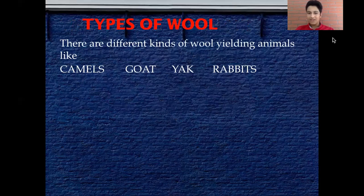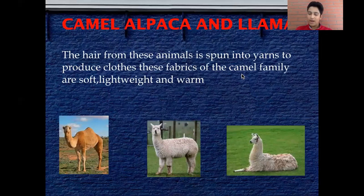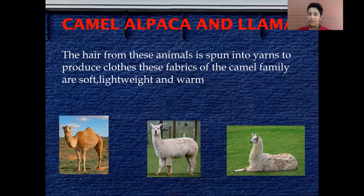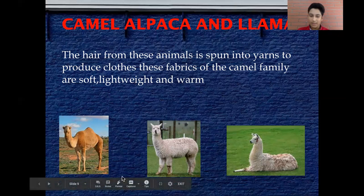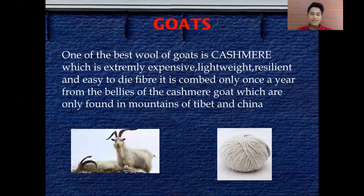There are different kinds of wool-yielding animals such as camels, goats, yaks, and rabbits. Camels, alpacas, and llamas are basically from the same family but a little bit different. The hair from these animals is spun into yarns to produce clothes. Fabrics from the camel family are extremely soft, lightweight, and warm.